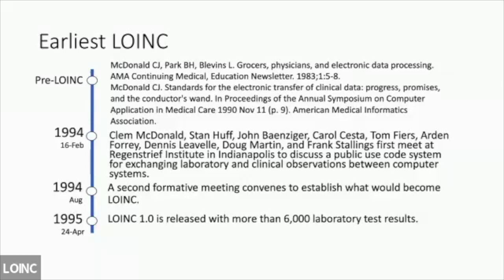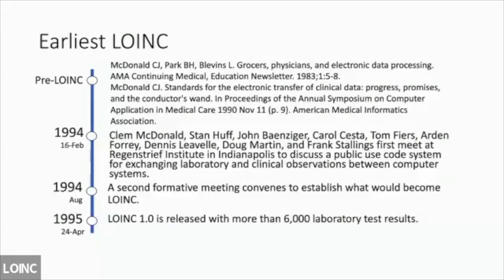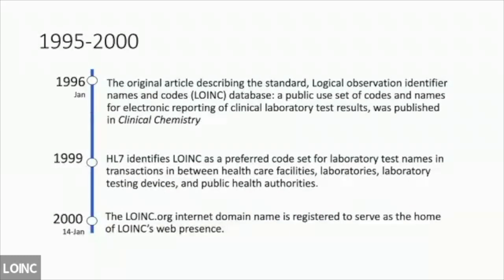In 1995, LOINC 1.0 was released, containing 6,000 laboratory tests — just laboratory at the beginning. From 1995 to 2000, the original article describing the LOINC database was published in Clinical Chemistry. In 1999, HL7 identified LOINC as the preferred code for laboratory test names — and eventually for all observations — in communication between health providers, data producers, and data users. And then LOINC obtained an internet domain registered in 2000.